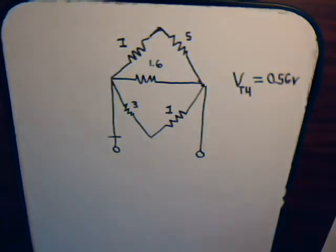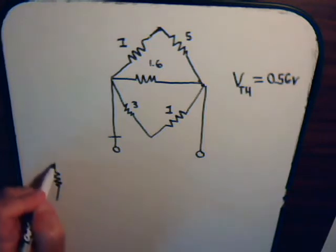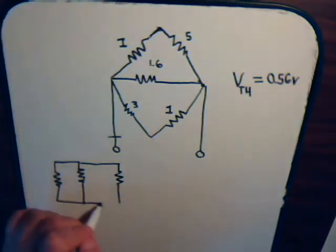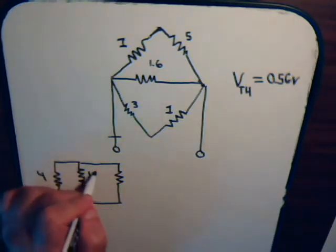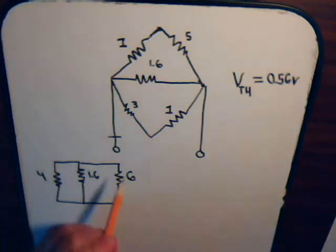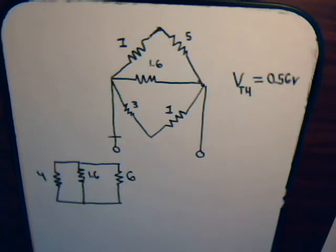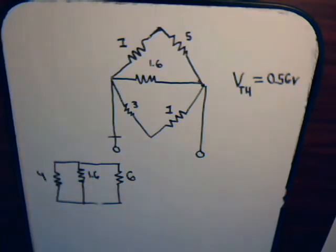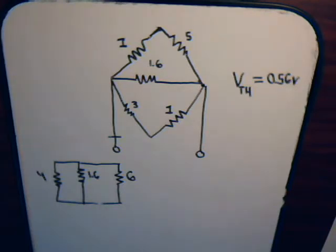So let's draw it like that: a 4Ω resistor, a 1.6Ω resistor, and a 6Ω resistor. Imagine hooking an ohmmeter across here — it puts out a trickle of current going from one terminal, through the circuit, and returning to the other terminal. Once it gets to the junction, it could go right across the 1.6Ω, or split along the path with total resistance 6Ω, or split down the path with total resistance 4Ω. So the resistance of the circuit as seen across these terminals is the equivalent of these three resistors being in parallel.